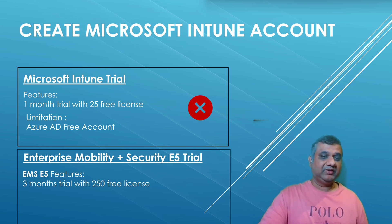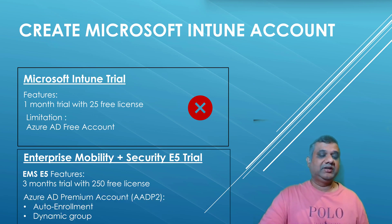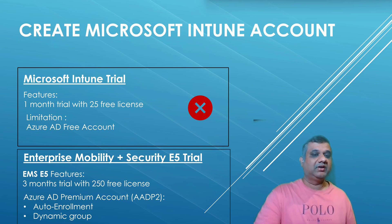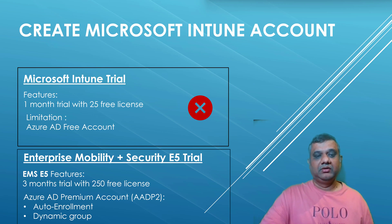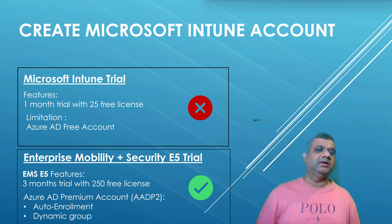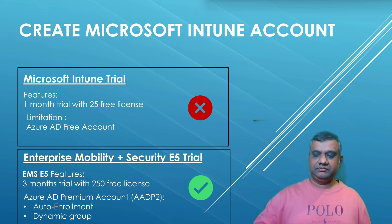I will go with the EMS E5 trial. The benefit of going with this kind of subscription is it provides a 90-day trial period with 250 free licenses, giving you three months to explore Intune. It also comes with an Azure AD Premium account. Azure AD Premium has two flavors — Premium P1 and Premium P2. EMS E5 covers Premium P2, so auto-enrollment and dynamic group features will be available.